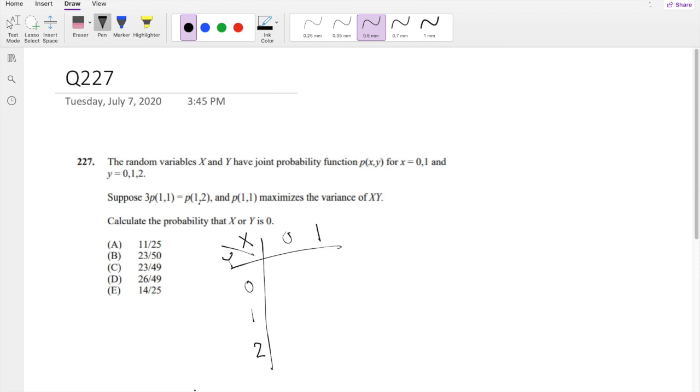Suppose that the probability of 1, 2 is 3 times the probability of 1, 1. And P of 1, 1 maximizes the variance of XY. Alright, so then I'm going to let P of 1, 1 be equal to z. Okay, so 1, 1 is equal to z. Then probability of 1, 2 then will be 3 times z.